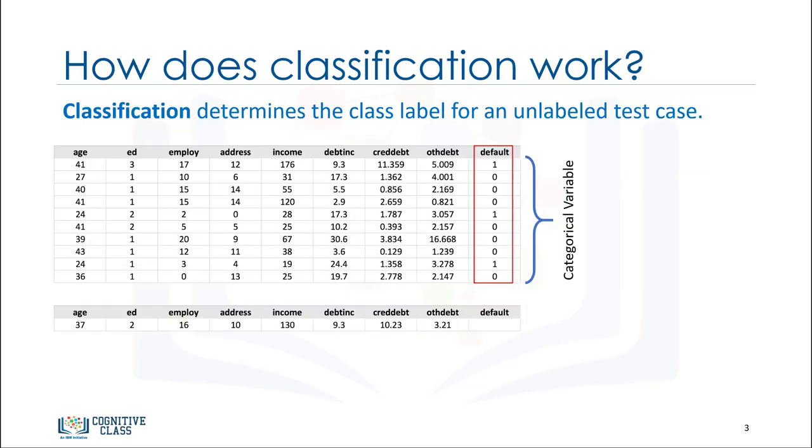So how does classification work? Given a set of training data points along with the target labels, classification determines the class label for an unlabeled test case.